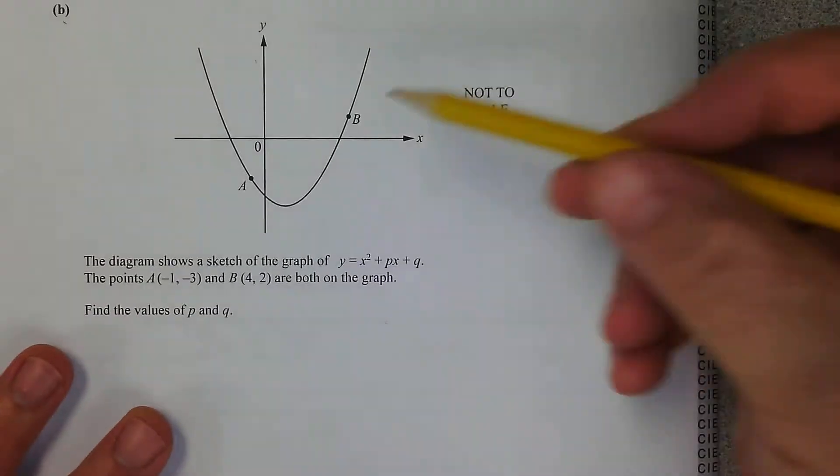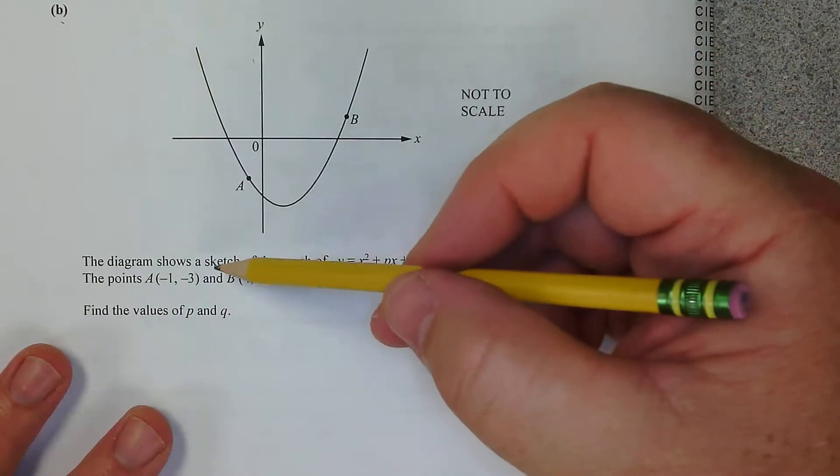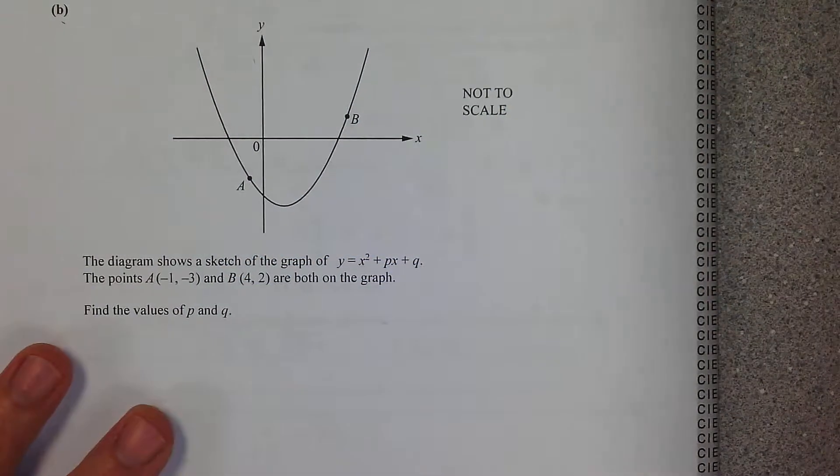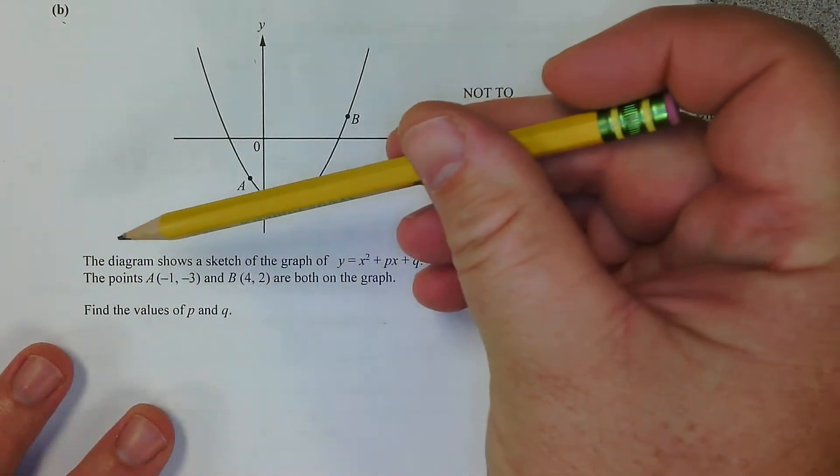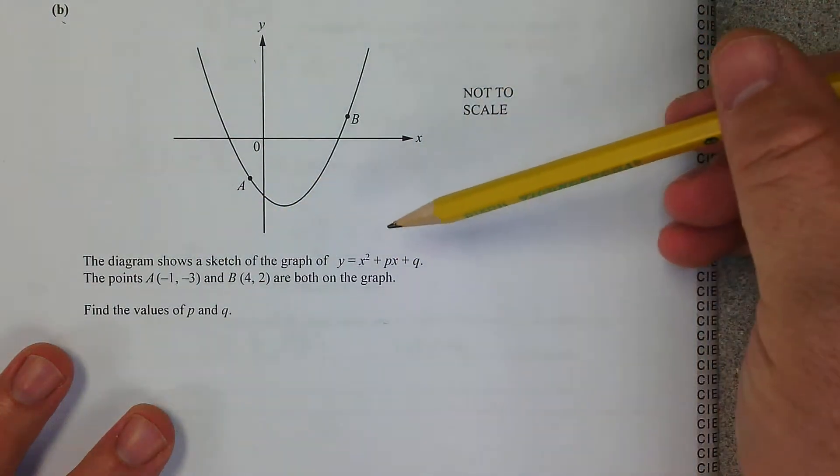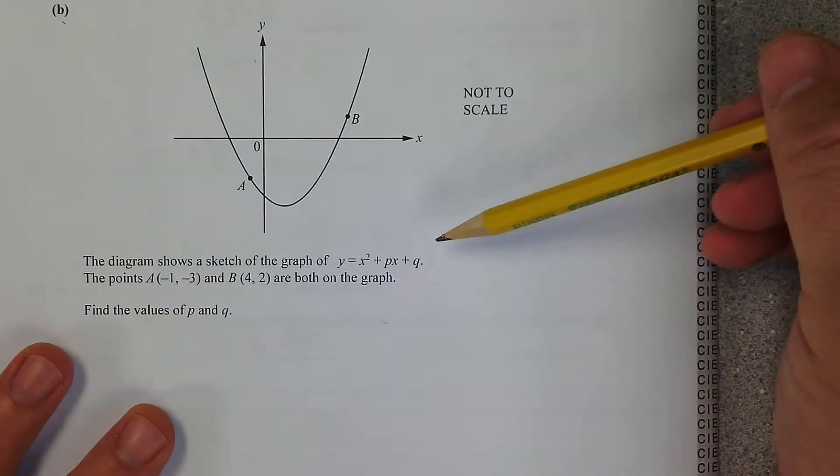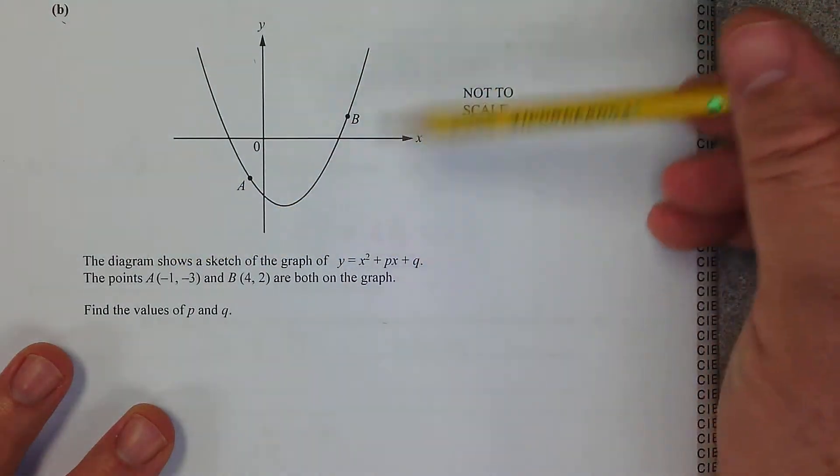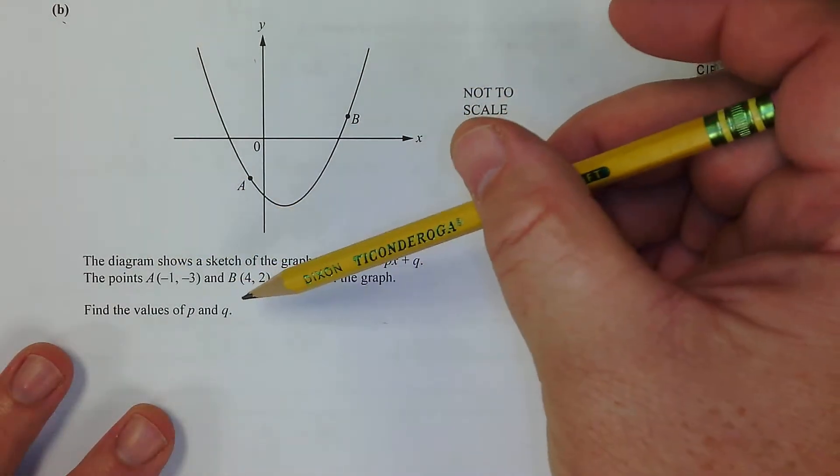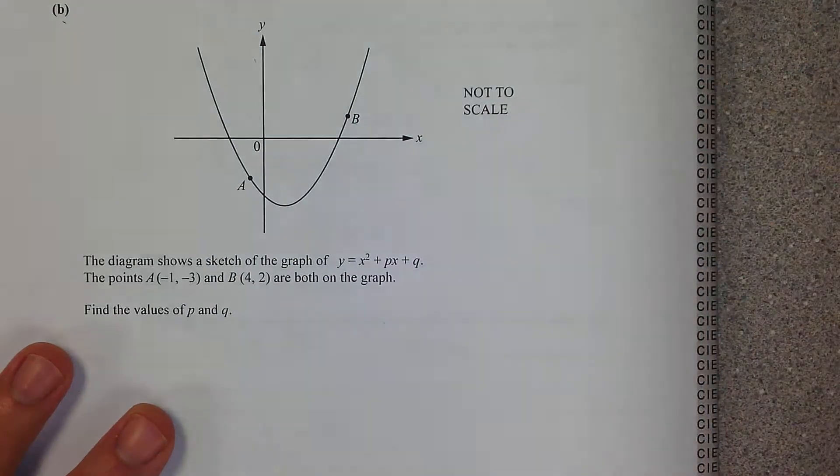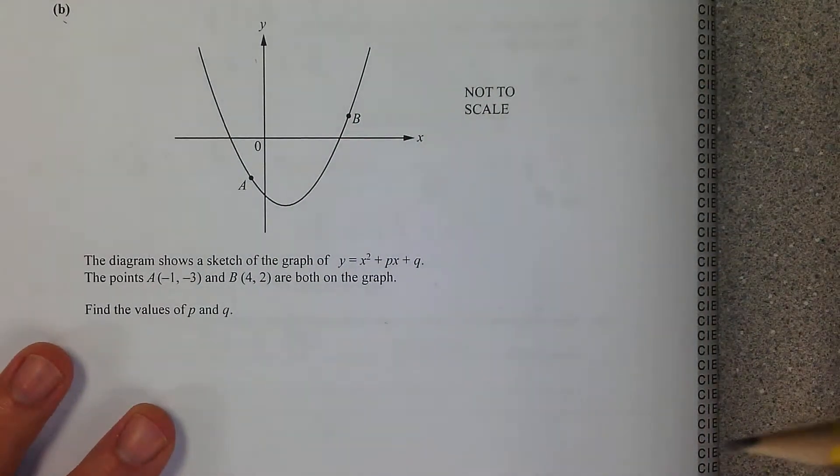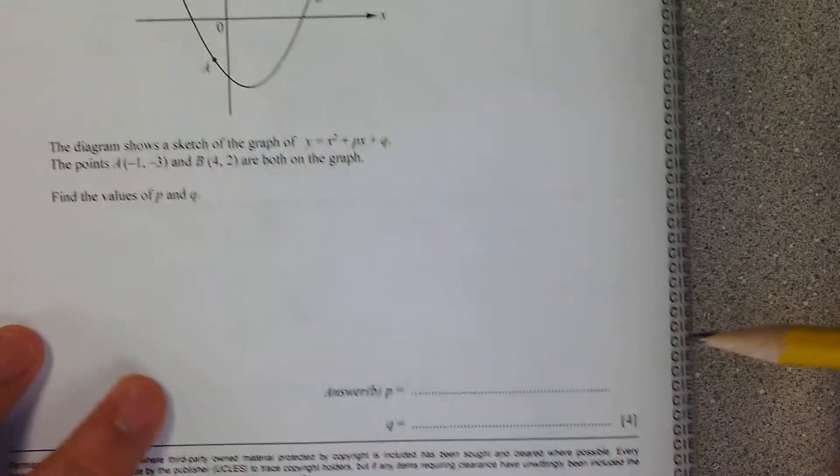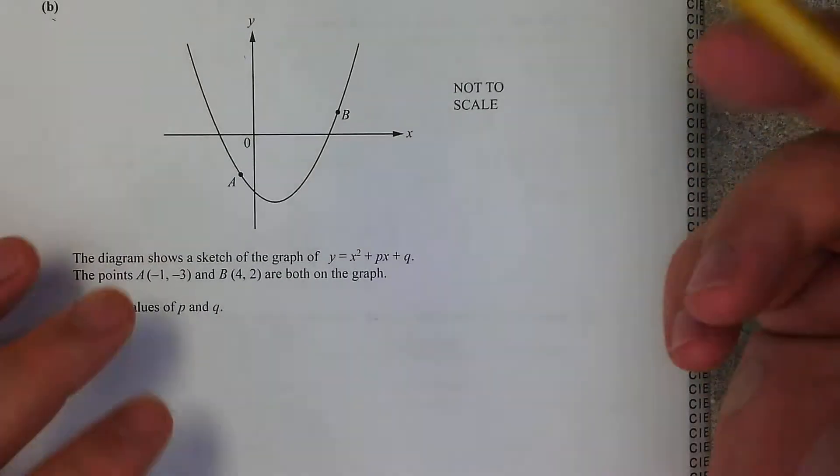So this one's a little tricky. We've got this graph right here. Point A, which is negative 1, negative 3. Point B, which is 4, 2. The diagram shows a sketch of y equals x squared plus px plus q, and it gives us point A and point B are both on the graph. Find the values of p and q. This is worth four points, which means there's a lot of work involved.